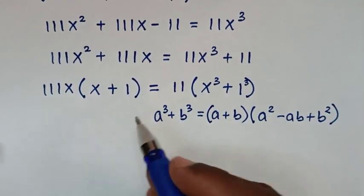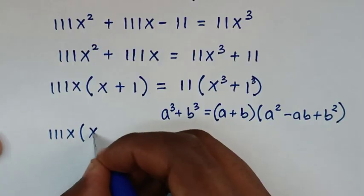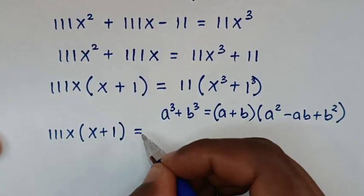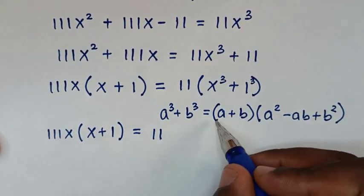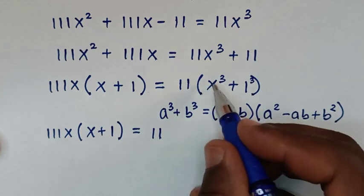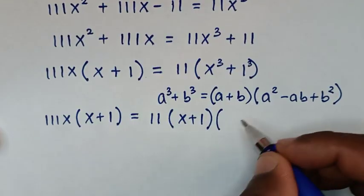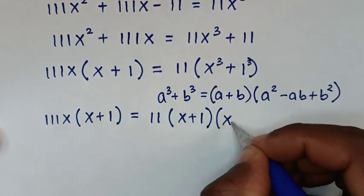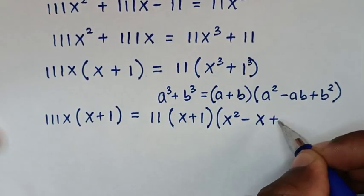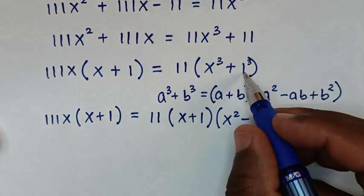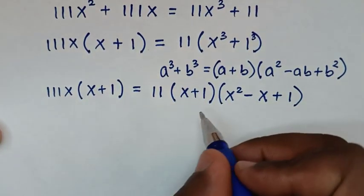So x power 3 plus 1 becomes (x plus 1) times (x squared minus x plus 1). Now we have 11x times (x plus 1) times (x squared minus x plus 1) on the right side, equaling 111x times (x plus 1) on the left side.